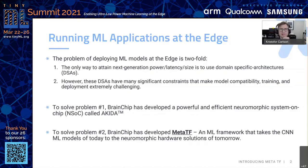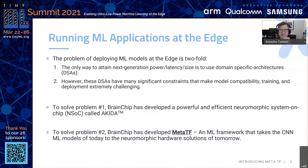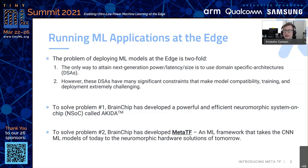So you want to run ML applications at the edge, and the problem usually is twofold — there's a hardware problem and a software problem. Let's talk about the hardware problem first. Usually the only way to attain next-generation power, latency, and size is to use something called domain-specific architectures, or DSAs. That's exactly what Dylan has presented — a hardware device optimized specifically to run at the edge.